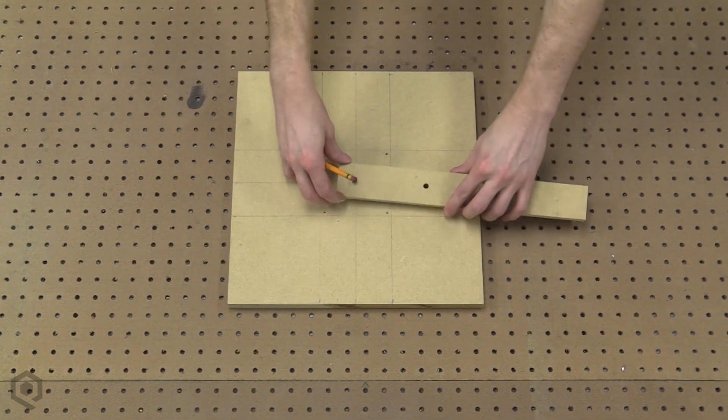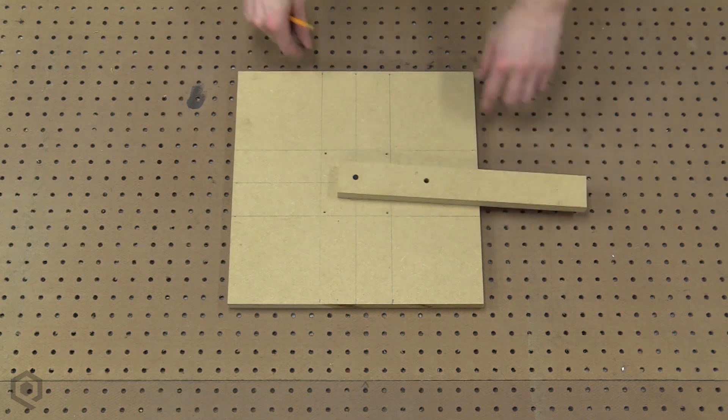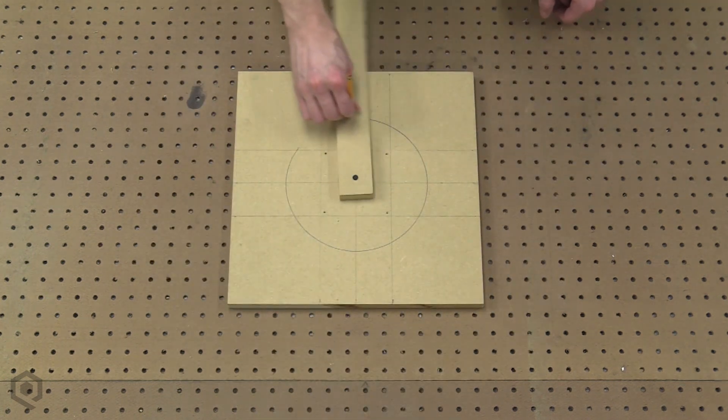Place the skinny board on top of the big board and make the nail go into the center hole you drilled earlier. Now hold it steady and spin it around. Congratulations, you just drew a circle.